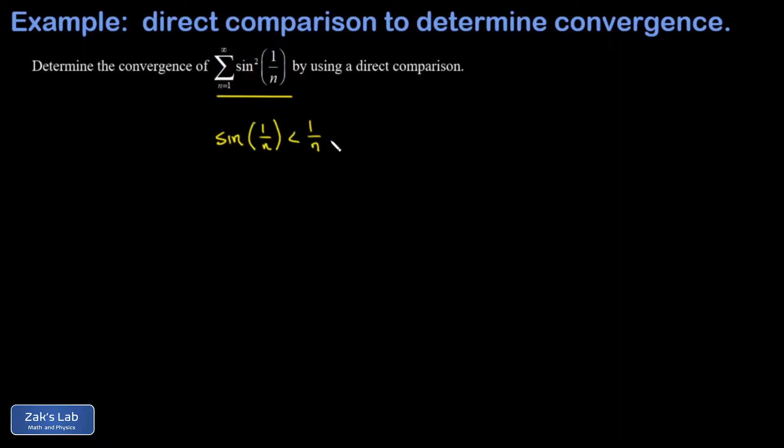And that inequality is that the sine of 1 over n is less than 1 over n itself. And I'll post a link to the video where this was derived. It was derived by a geometric construction on the unit circle.